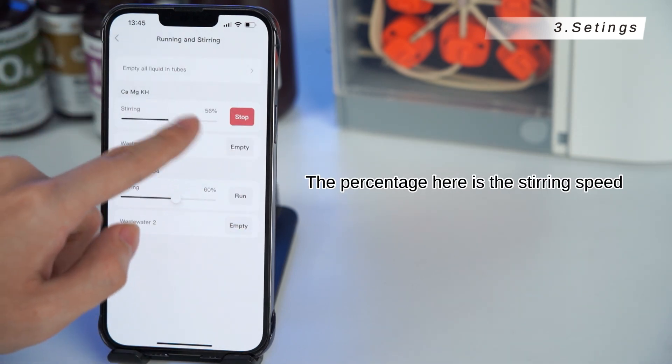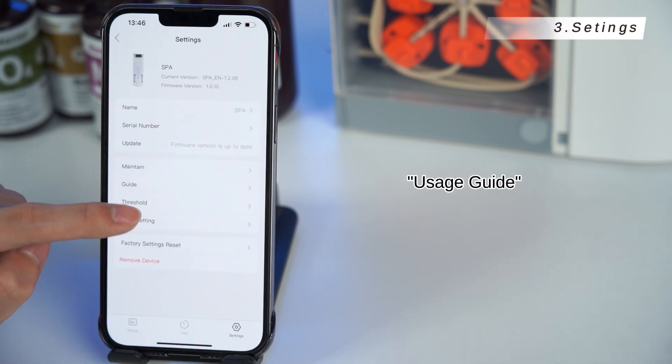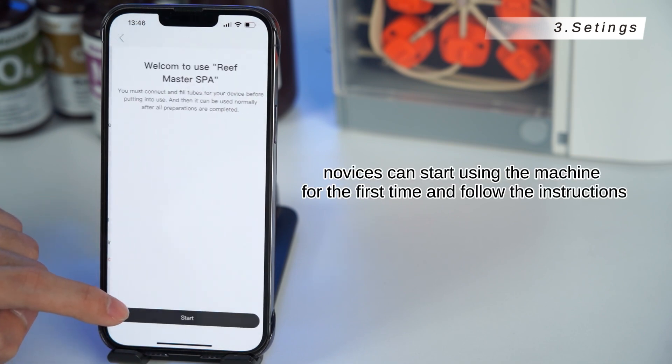Return. Click run to stir. The percentage here is the stirring speed, which we can adjust. Click empty to empty the waste liquid. Usage guide, novices can start using the machine for the first time and follow the instructions.